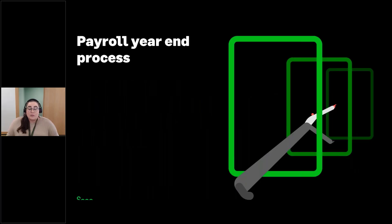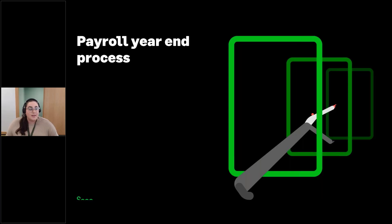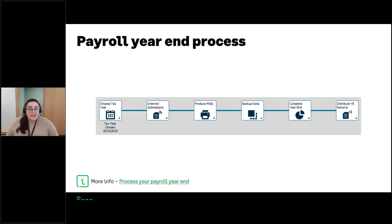Payroll year end in Sage 50 Payroll is just six steps to work through. Before I demonstrate these in the program, I'd like to give you a bit more of an idea of what each step is. First is choosing the tax year, which this year is going to be the 2024-25 tax year, so you're choosing the tax year that you're ending.